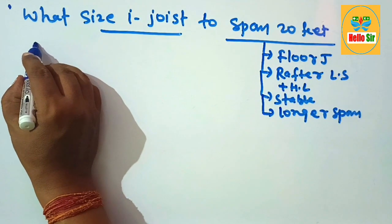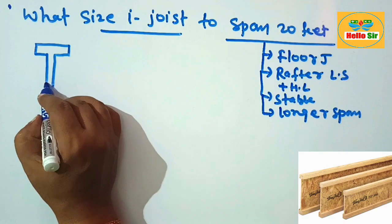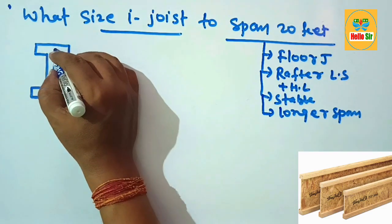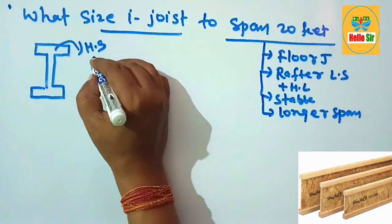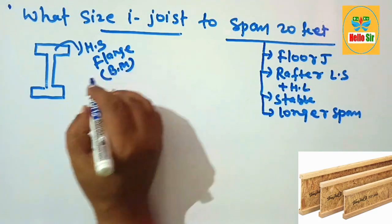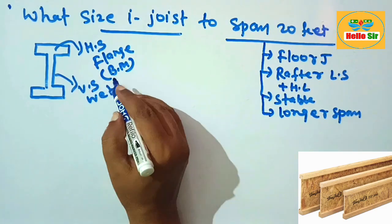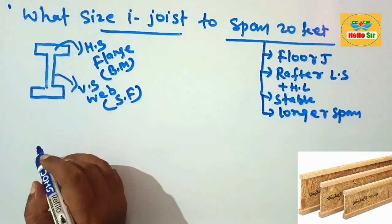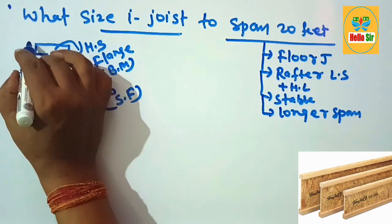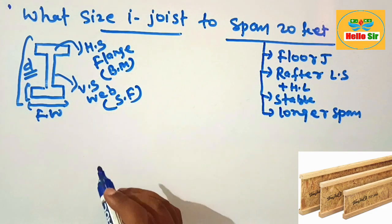Here we'll make a rough diagram to understand the dimensions of the I-joist. This is a wood I-joist with two horizontal sections. These horizontal sections are known as flanges and generally resist bending moment. This vertical section is known as the web and it generally resists shear forces. This is the flange width, the thickness of flange, and the depth of the I-joist. These are the several dimensions for the I-joist.